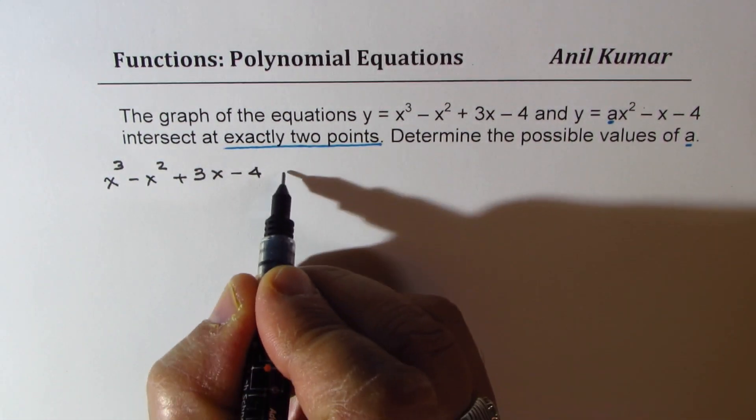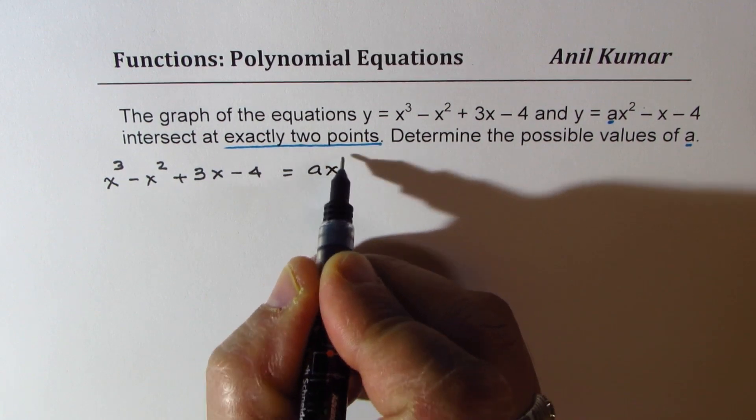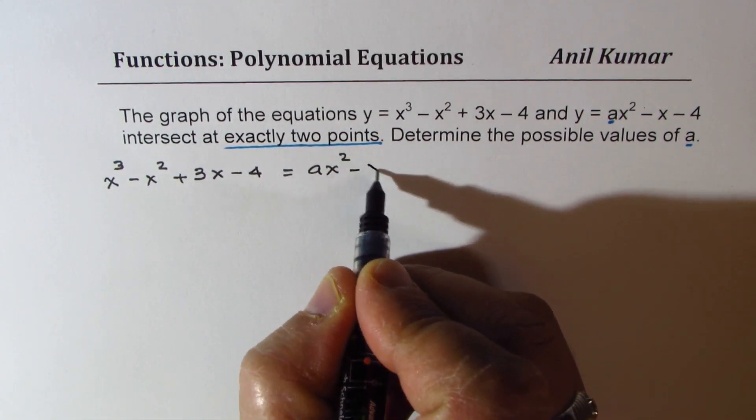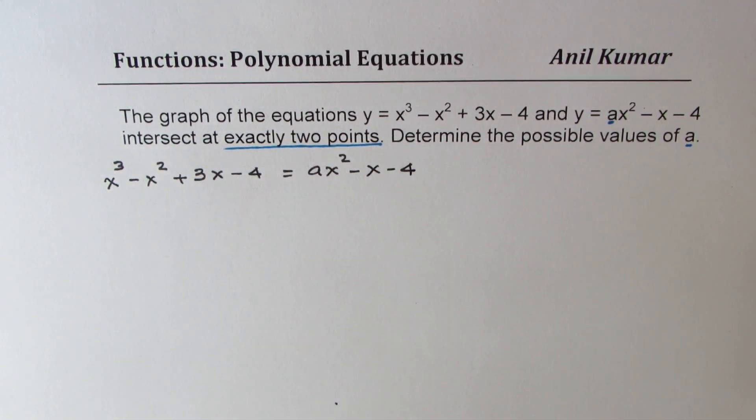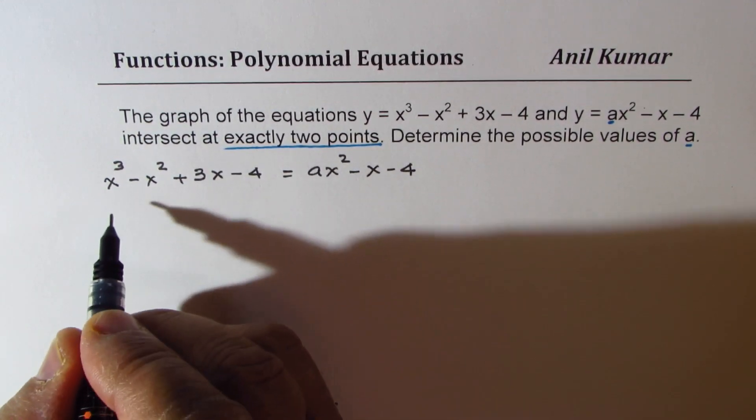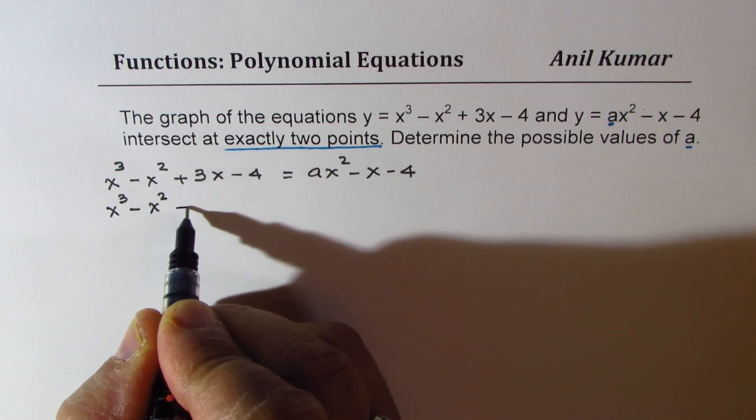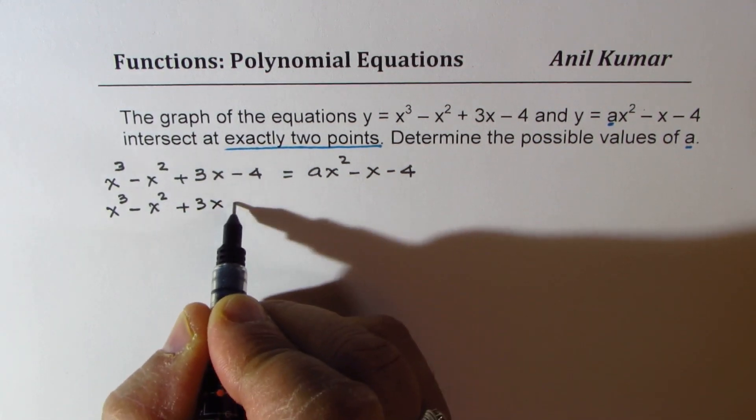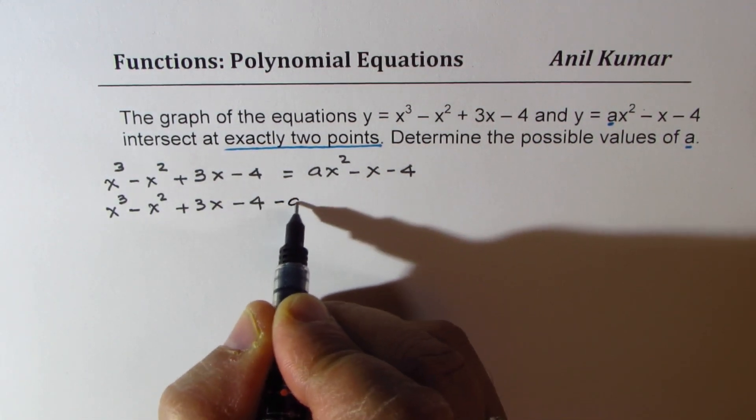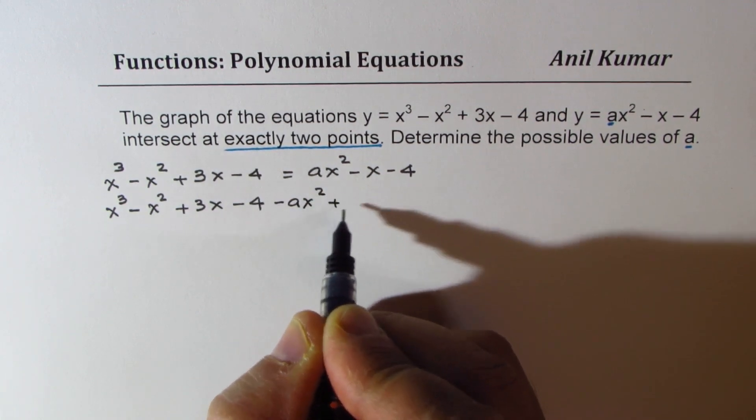Let's begin by equating the two equations. We have x cubed minus x squared plus 3x minus 4, that should be equal to ax squared minus x minus 4. So let's bring them to one side and then solve.